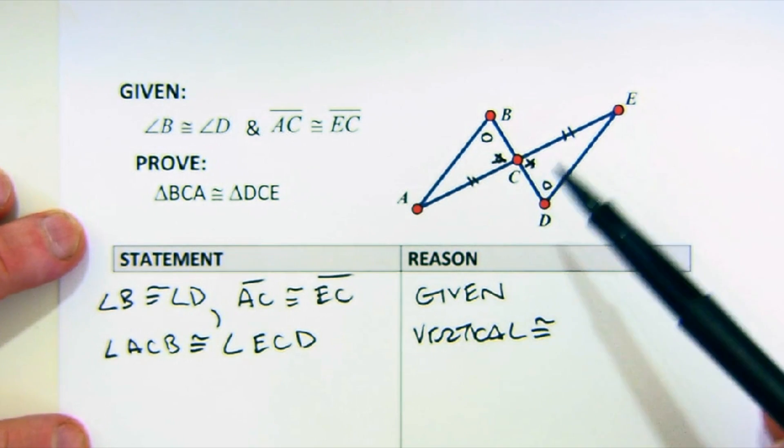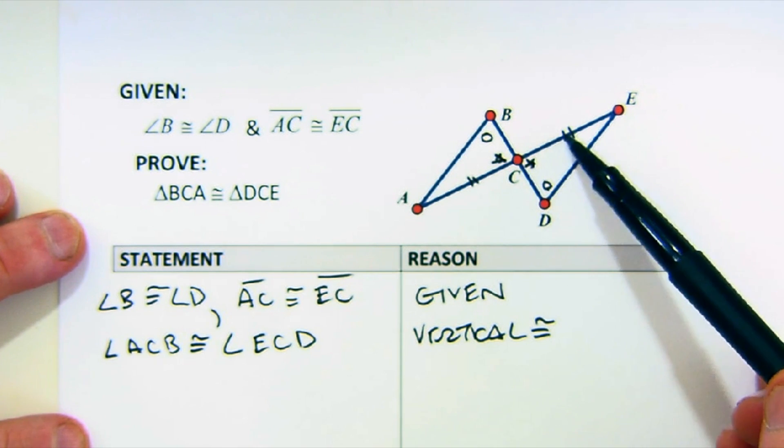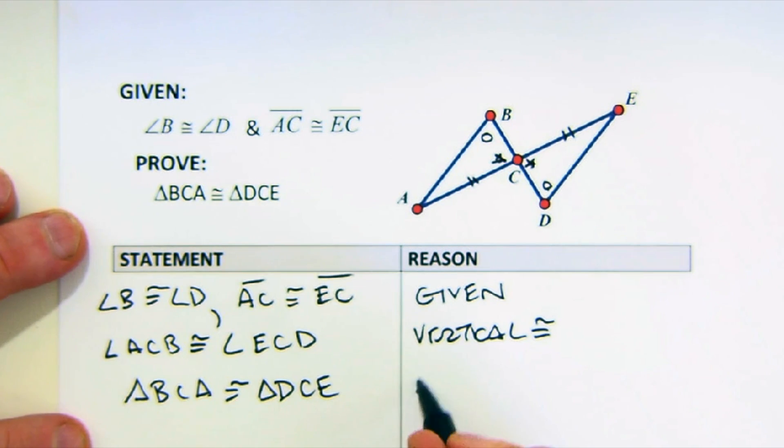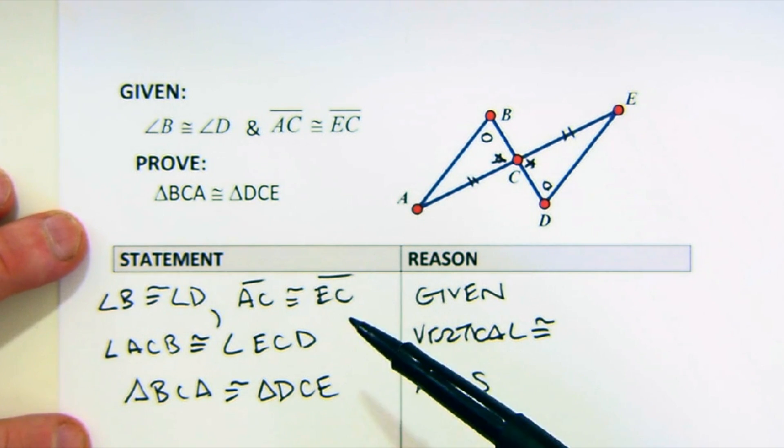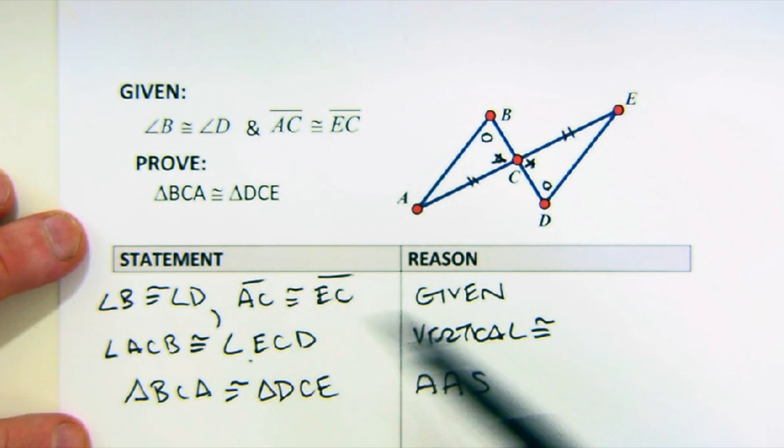Vertical angles are congruent. So this equals this. And now when I look at the order things come in, I see it comes in an angle, and then an angle, and then a side, which is perfectly fine. Triangle BCA, congruent to DCE, angle, angle, side. Again, you can see it's a very logical way to organize our thoughts, statements and reasons, statements and reasons. It takes all the English out of the paragraph proof, basically.